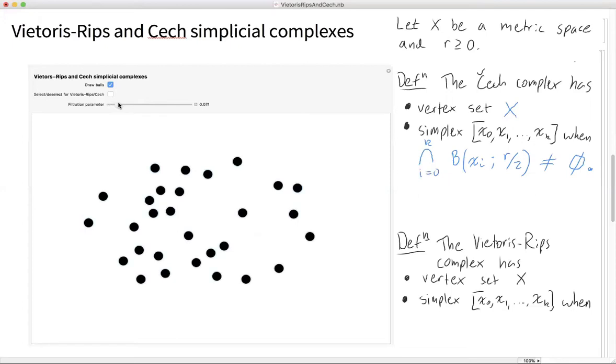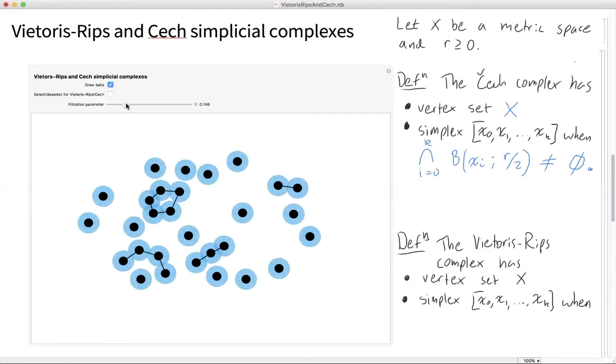If I raise this scale a little bit, I have these balls. Still no two balls intersect. So the Čech complex is just all the points. Now balls start to intersect. And when two balls intersect, I get an edge between those two points. Where's the first time where we have a triple intersection? Ah, right here. This is our first triple intersection. Three balls have a point of triple intersection. So I have a triangle in the Čech complex.